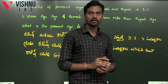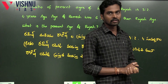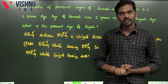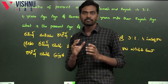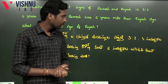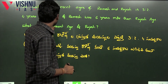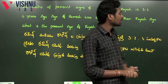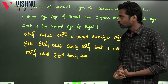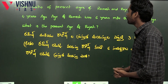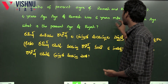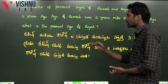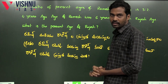We have to do this in a descriptive way, as we already had a problem in the last class. We attempted to do it. Now we have another problem. The ratio of the present ages of Ramesh and Rajesh is 3 to 2. Four years ago, the age of Ramesh was 6 years more than Rajesh's age. What is the present age of Rajesh?